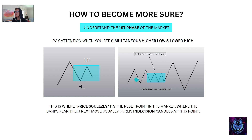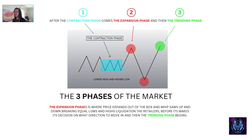What happens is price goes into this contraction phase, then it expands out and liquidates everyone, expands down, liquidates everyone again — I call this the whipsaw — and then it only decides on what direction it wants to move in. I'm going to briefly cover the three phases: after the contraction phase, comes the expansion phase and then the trending phase. I've got another set of videos coming up where I'm going to focus on the expansion phase and the trending phase.